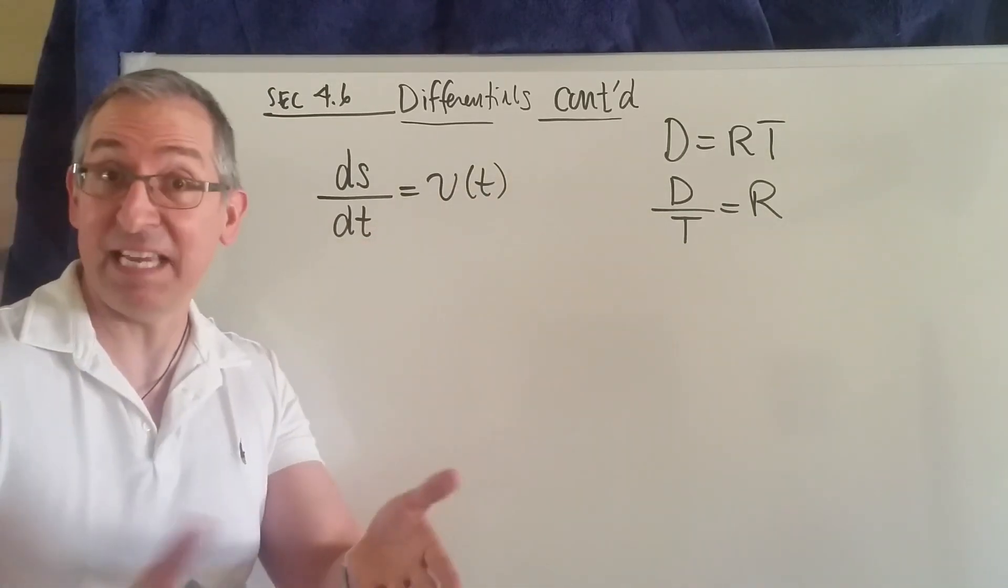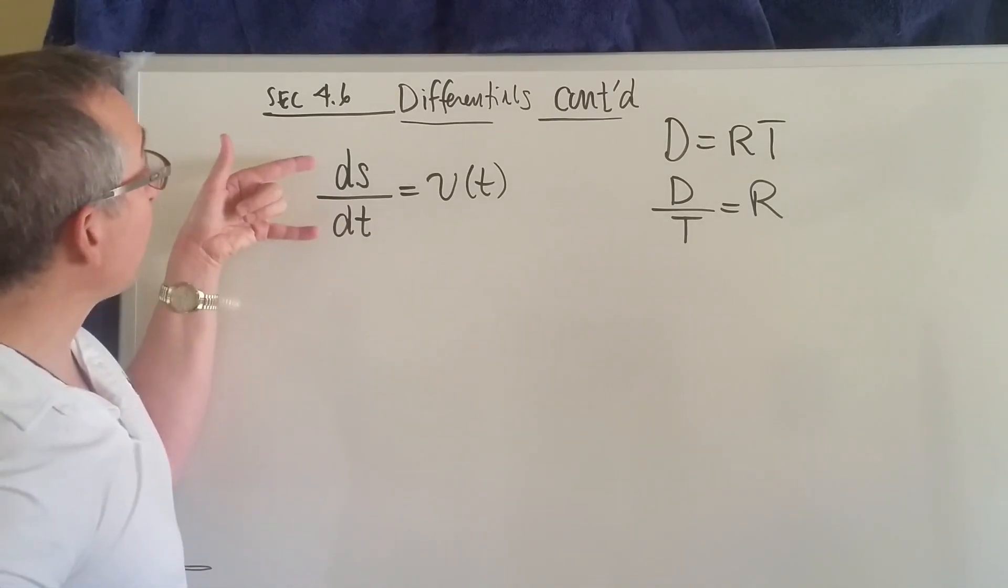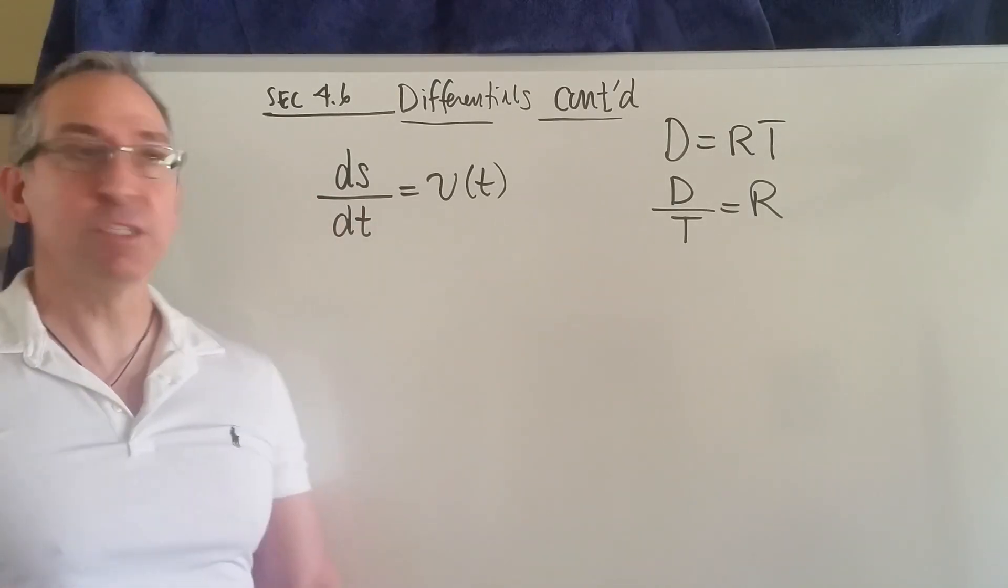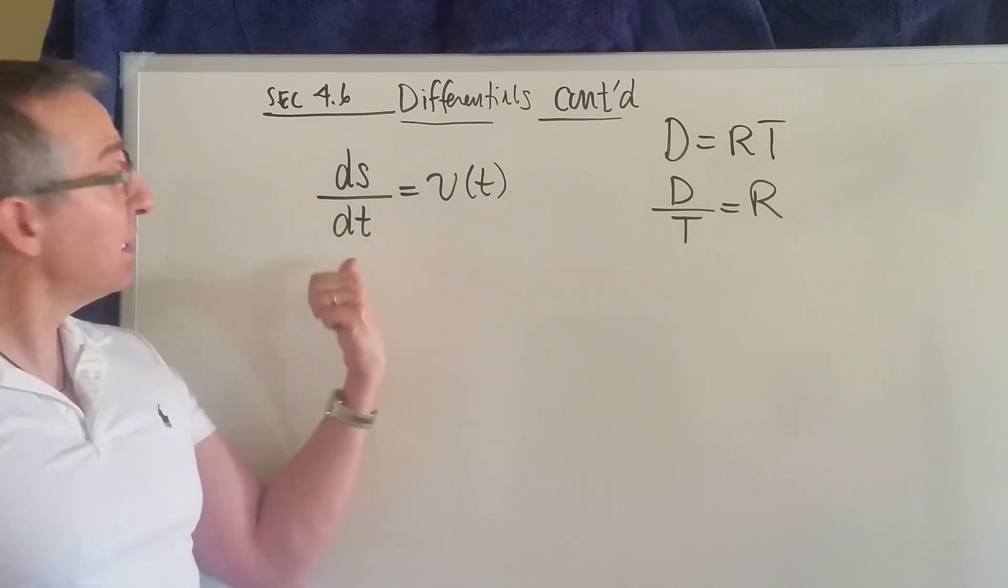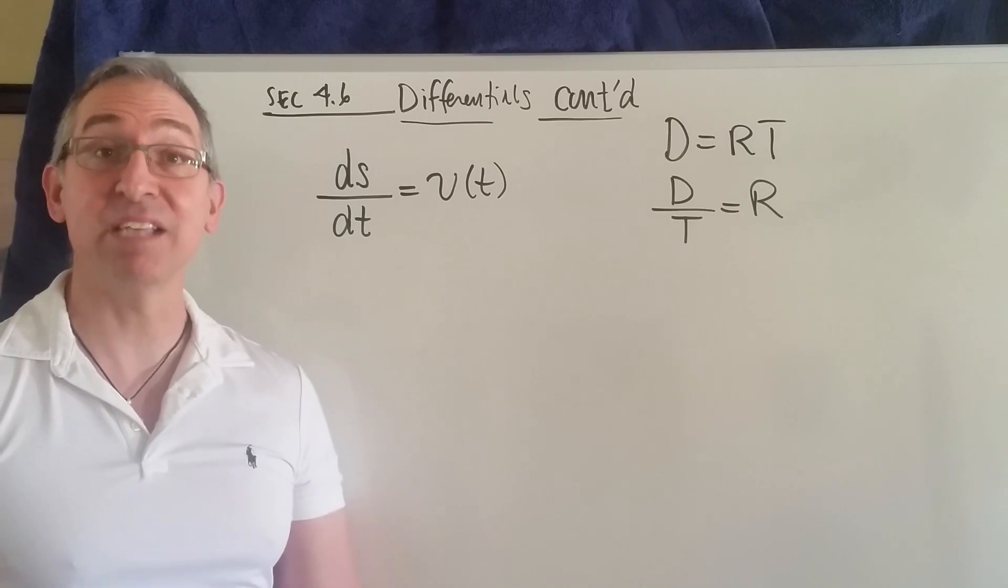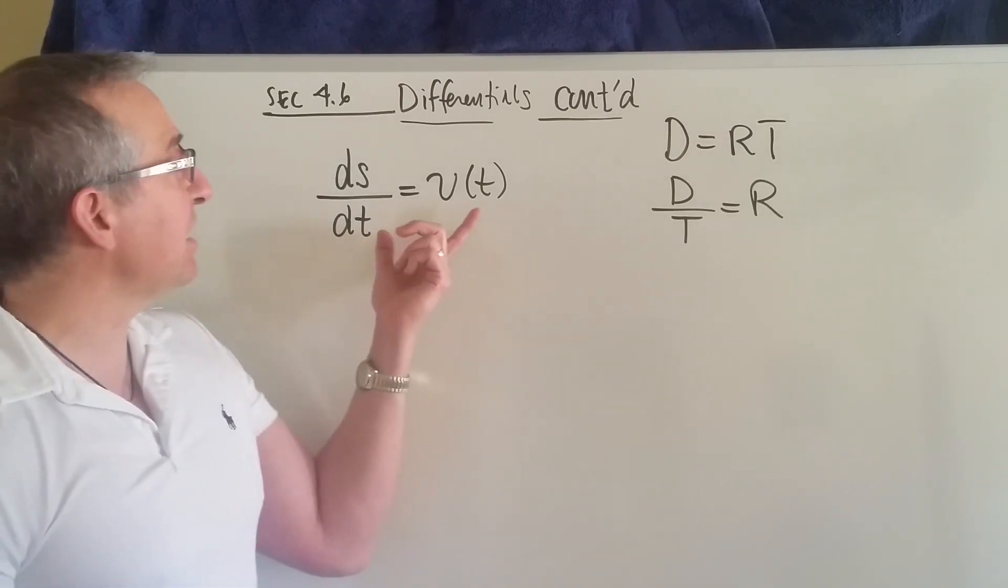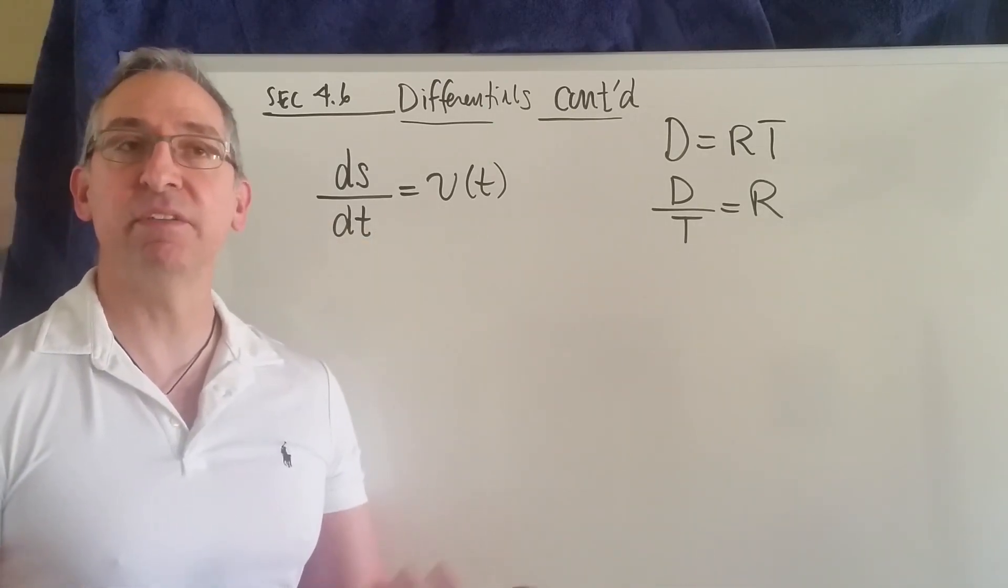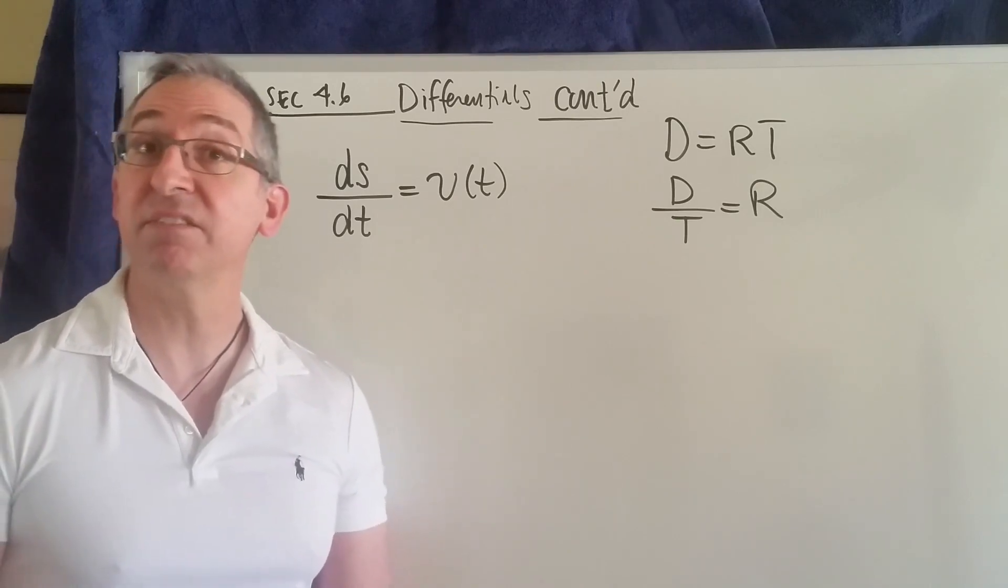Don't we have the same thing? Essentially the same thing. Look at this. You've got the ratio of two differentials, the differential of position, the differential of time, and that ratio is equal to the instantaneous velocity. So that's a nice application of this concept of differentials that we were talking about in the previous video.